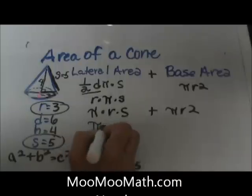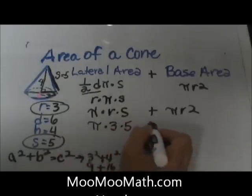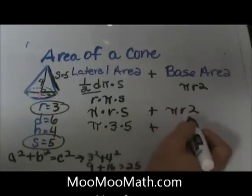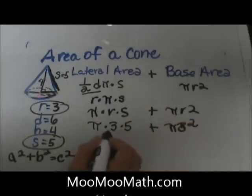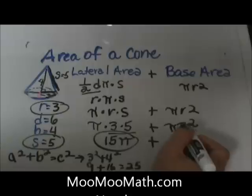plus the base area which is just our base circle times the radius which is 3². At the front my lateral area is going to be 15π. My base area is going to be 3² or 9π.